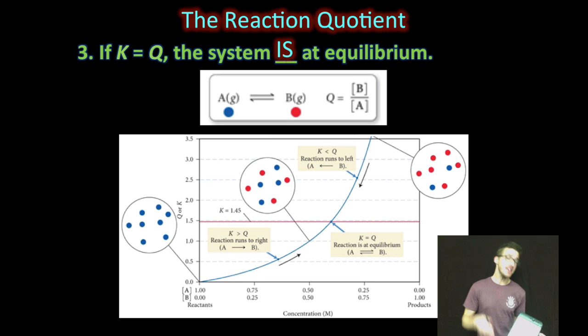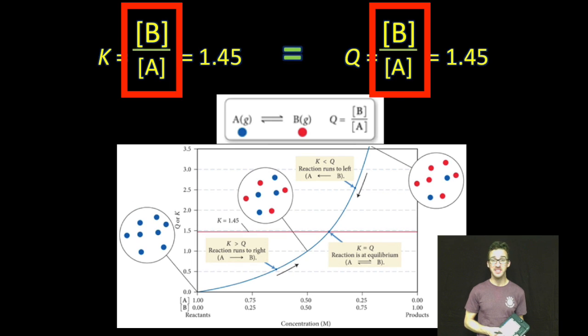And then lastly, if K is equal to Q, the system is already at equilibrium. And although the reaction is still occurring in both the forward and reverse directions, the relative concentrations of products to reactants aren't going to change. Boom, K is equal to Q. We're already at equilibrium. There's going to be no shift in the reaction.